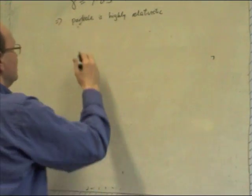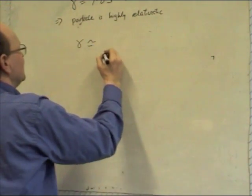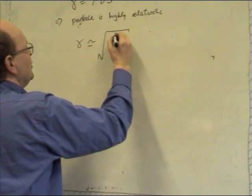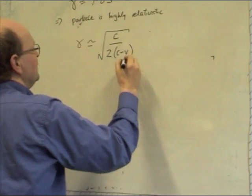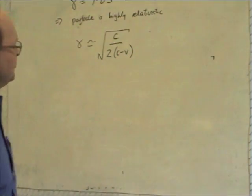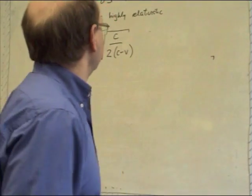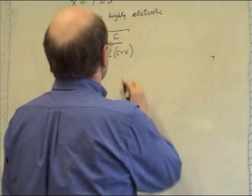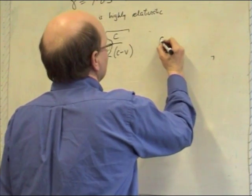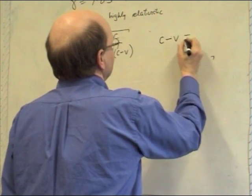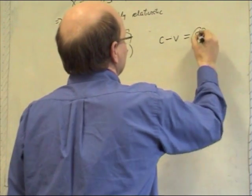Now, in this case, the prescription is to use an approximate formula that gamma is approximately equal to the square root of c upon 2 times c minus v. So c minus v is the difference between the speed of light and the speed of the particle v. In a minute, I'll prove that this is true. But let's, for now,